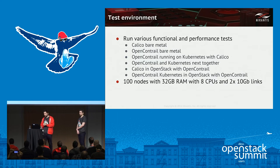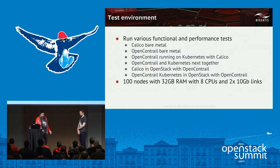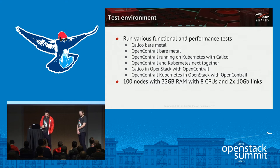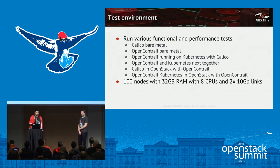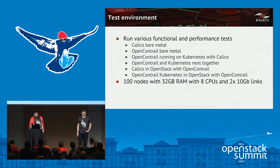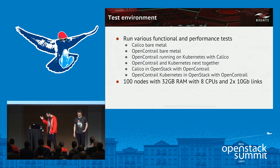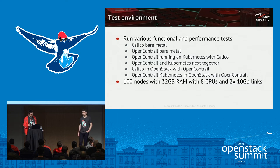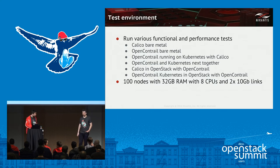We ran a test environment with several functional and performance tests over almost one year. We ran Calico on a bare-metal cluster with 100 nodes; Kubernetes with Open Contrail 2.x and 3.x; Open Contrail inside Kubernetes with Calico; Open Contrail and Kubernetes together; Calico in OpenStack with Open Contrail through the BGP-as-a-Service feature; and Open Contrail with Kubernetes in OpenStack using a single vRouter as data plane. We tested at scale up to 100 nodes.